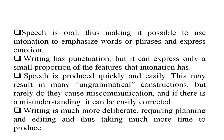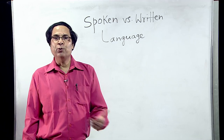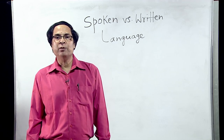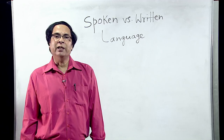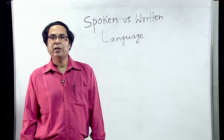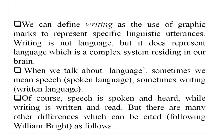Why? Because if there is a misunderstanding in speech, it can be easily corrected. But once you have written something, it is almost impossible to correct it once miscommunication happens, because the writer and the reader are not located in the same place. Writing is much more deliberate, requiring planning and editing and thus taking much more time to produce. Writing can be defined as the use of graphic marks to represent specific linguistic utterances. Writing is not language, but it does represent language, which is a complex system residing in our brain.